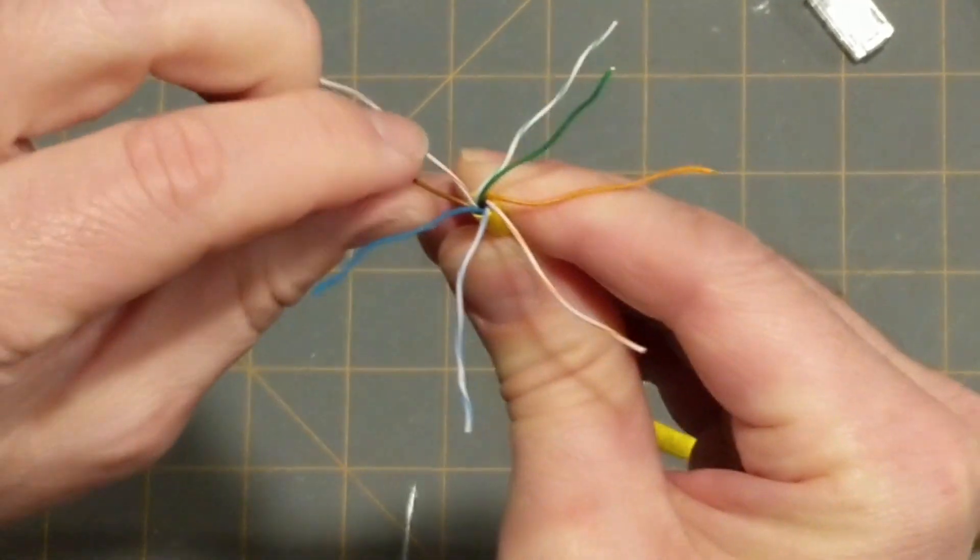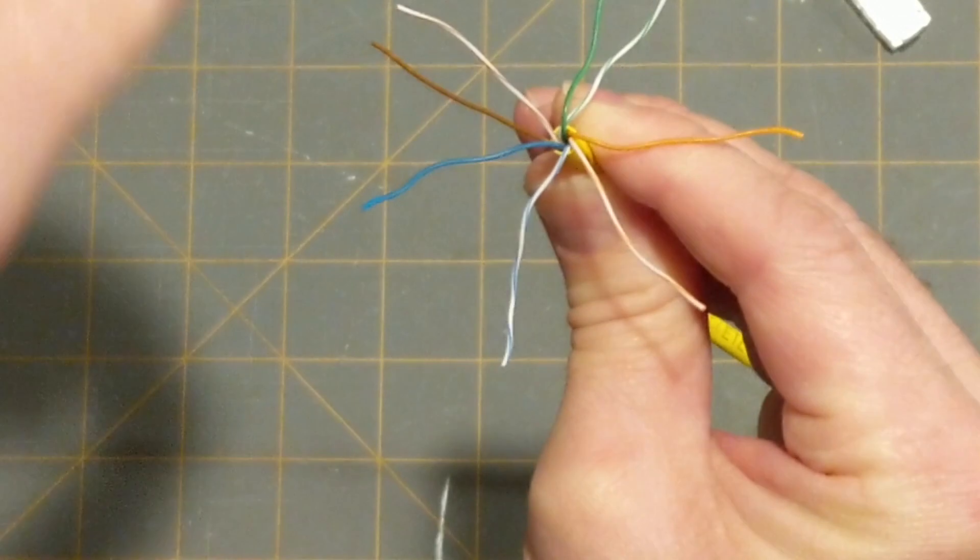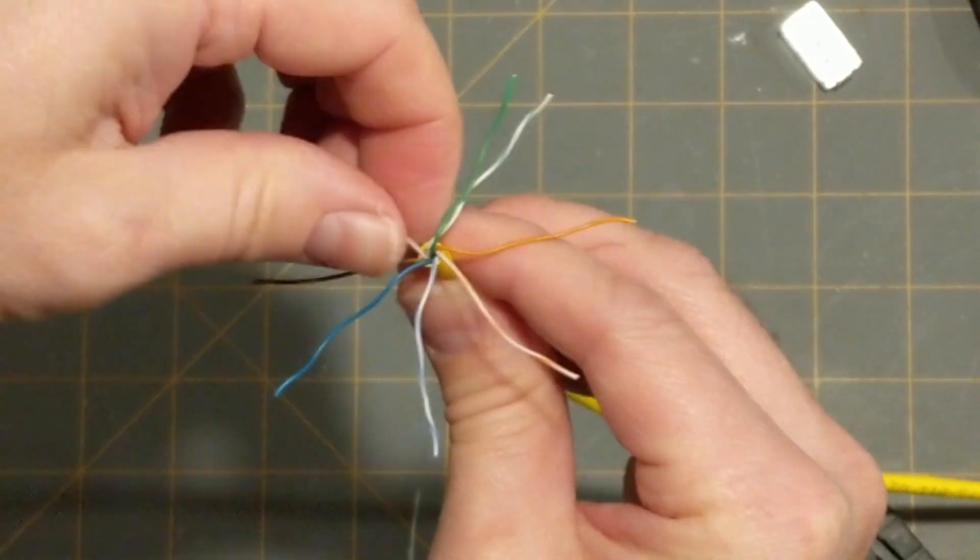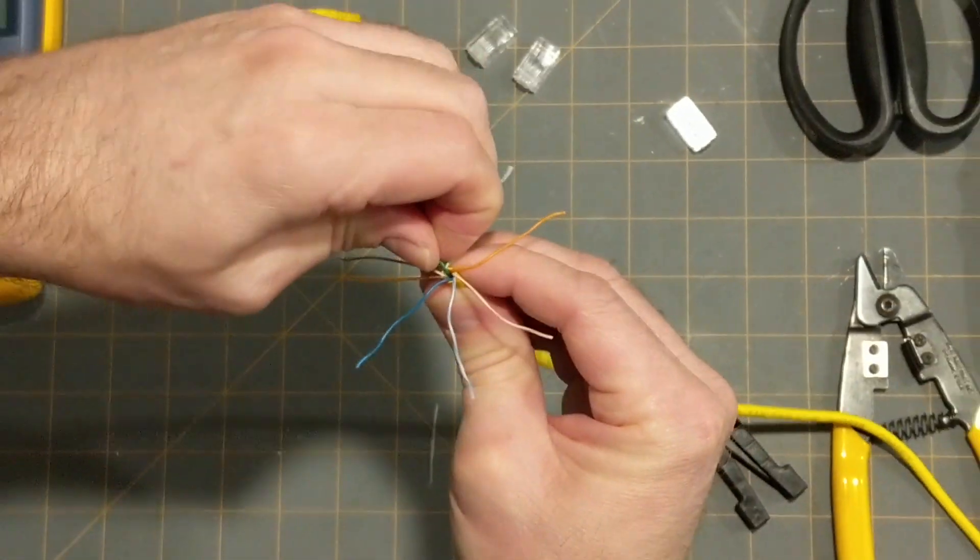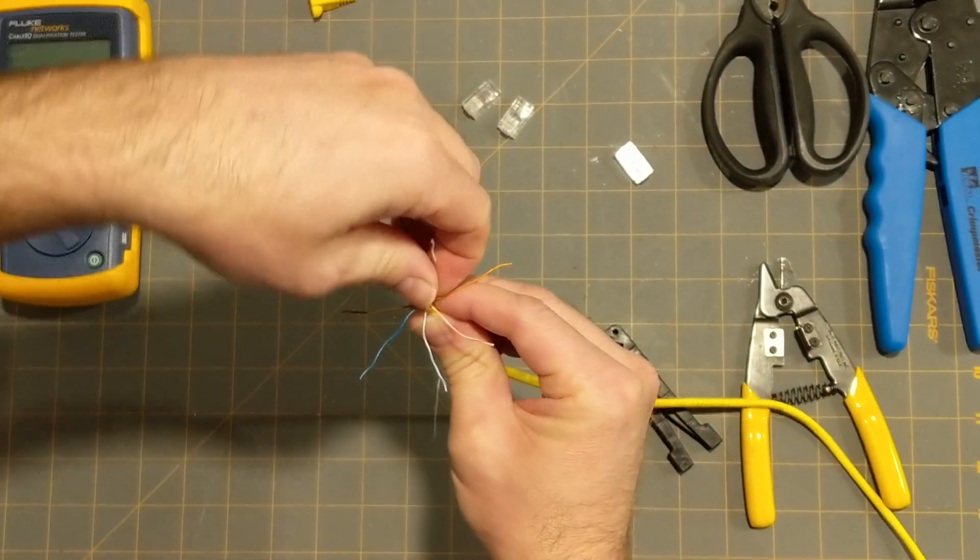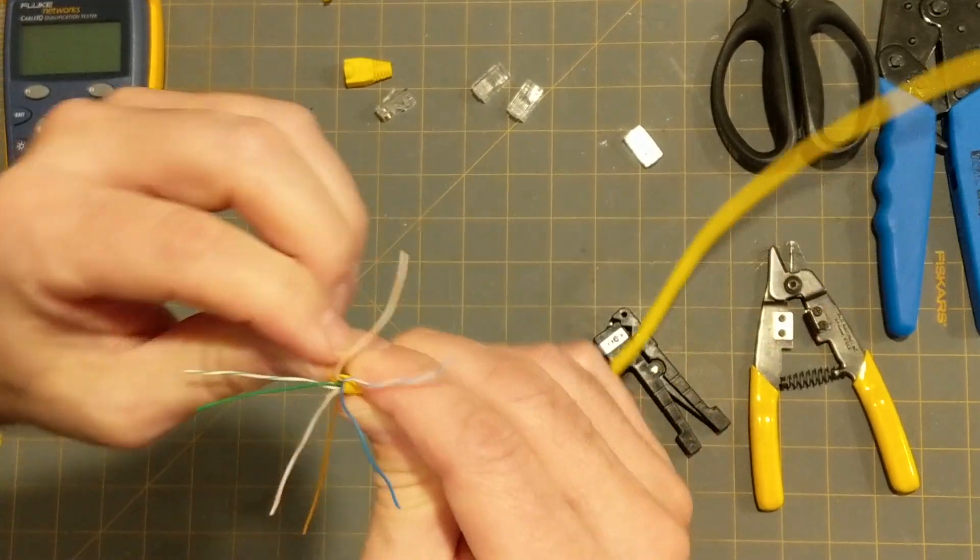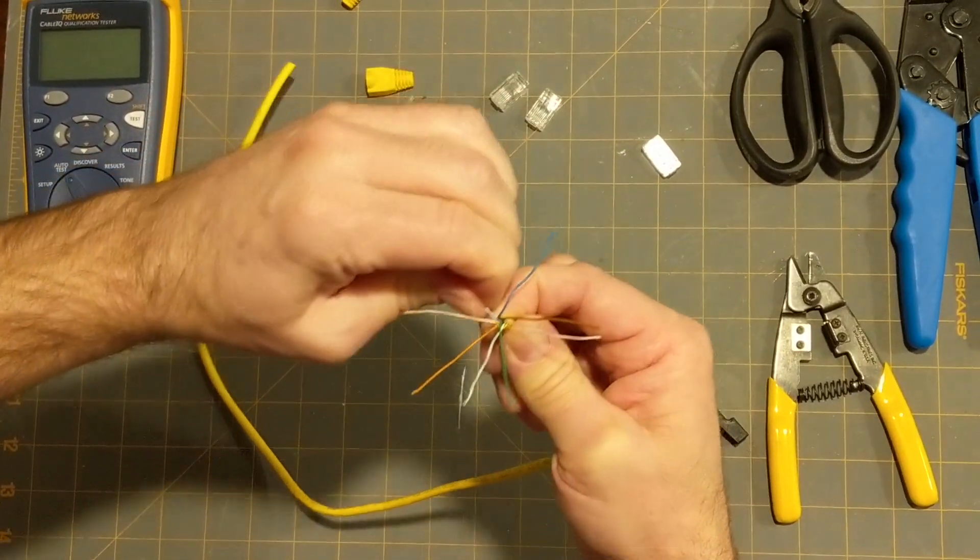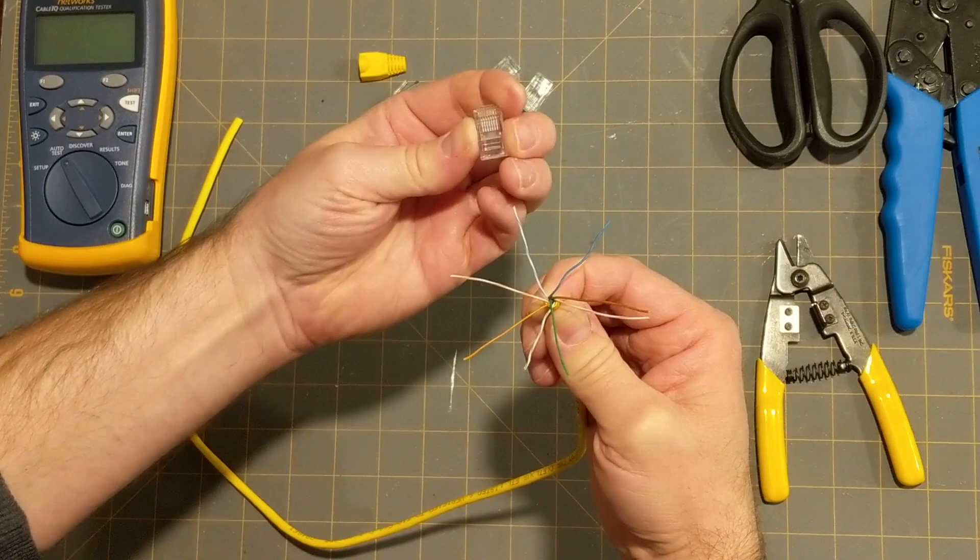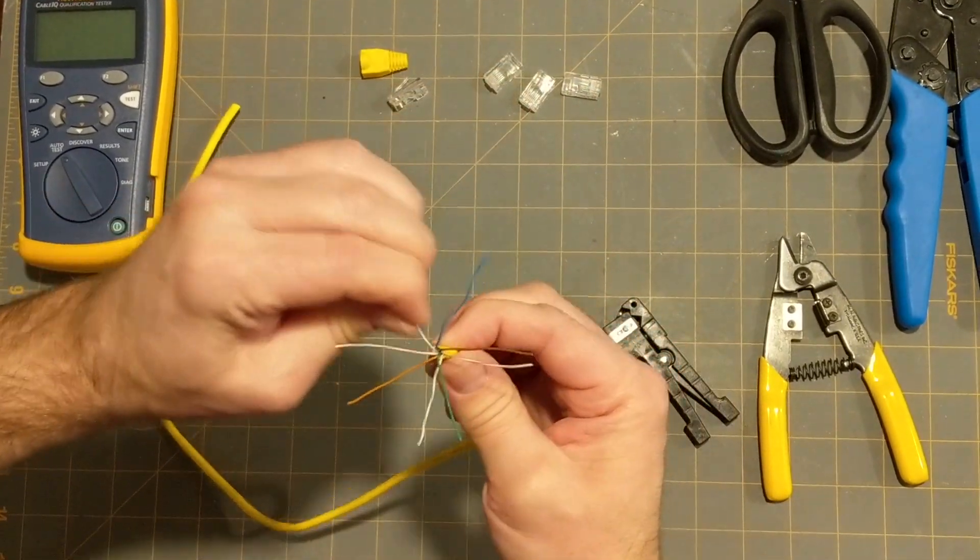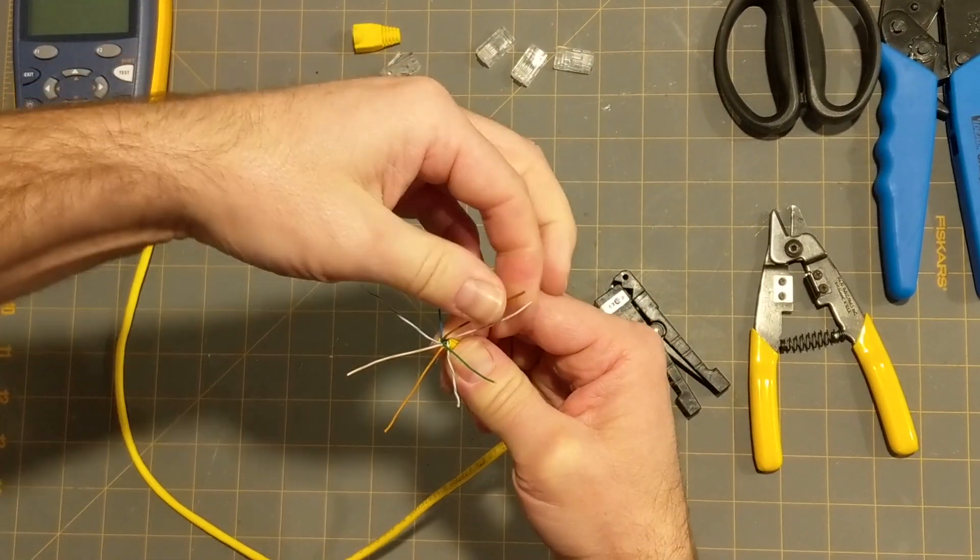Now, once we have each of these wires separated from each other, we want to straighten them out as well as possible. So, we're just going to pull these out straight, because as they have little kinks in them, it's going to make it difficult to actually align them properly to put them inside of the terminator on the end. So, we're going to straighten each one of these out.